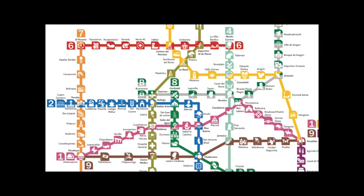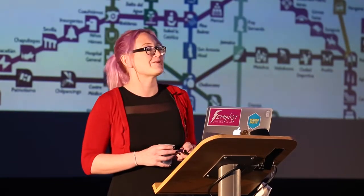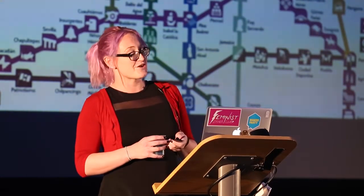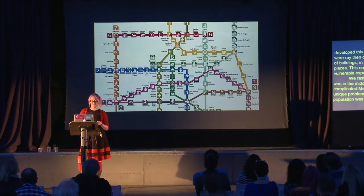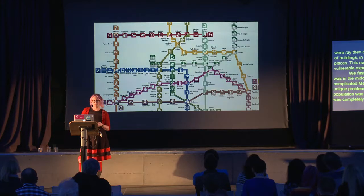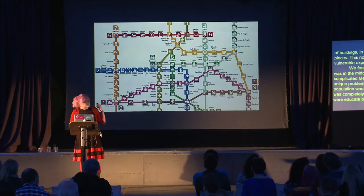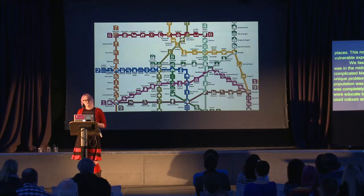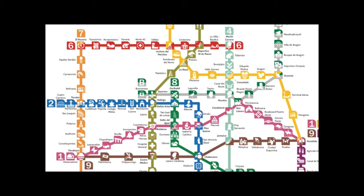If we fast forward to the 60s, Mexico City was in the middle of developing their rather complicated metro system, but they had a unique problem — a high percentage of the population was illiterate. In the 60s, 38% was completely illiterate and very few people were educated beyond the fifth grade. So they used colors and icons to lay out the system so you could find your way without needing to understand the words. These icons are still used today, even though literacy rates are now high in the city.